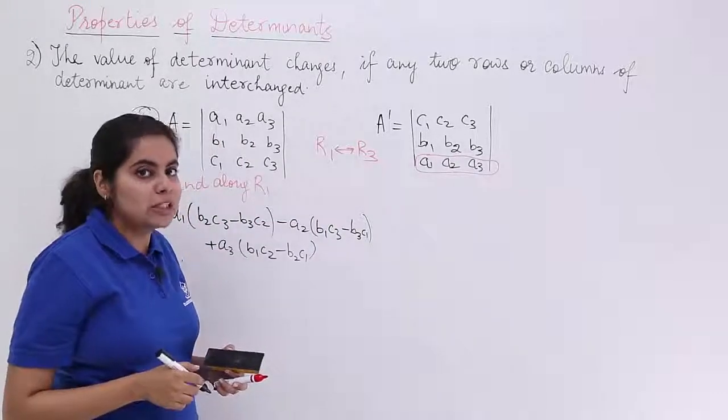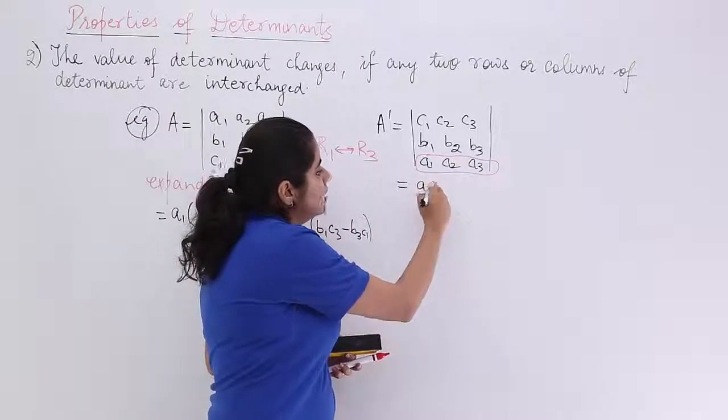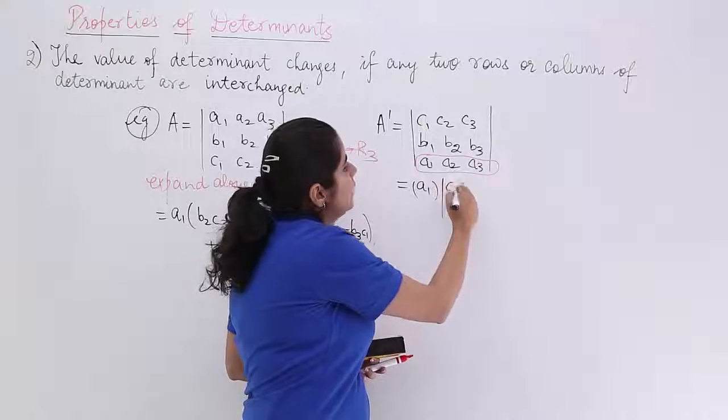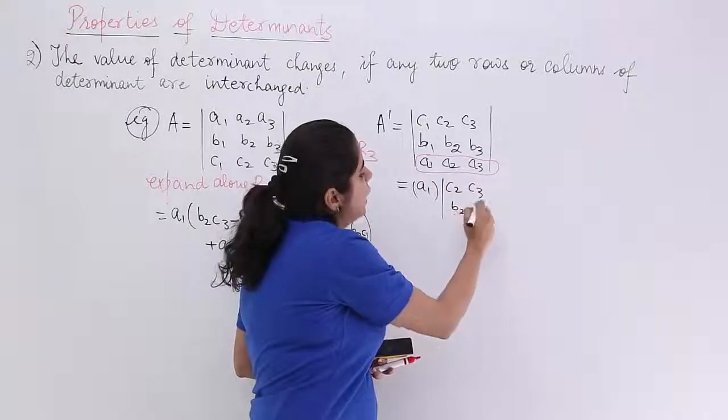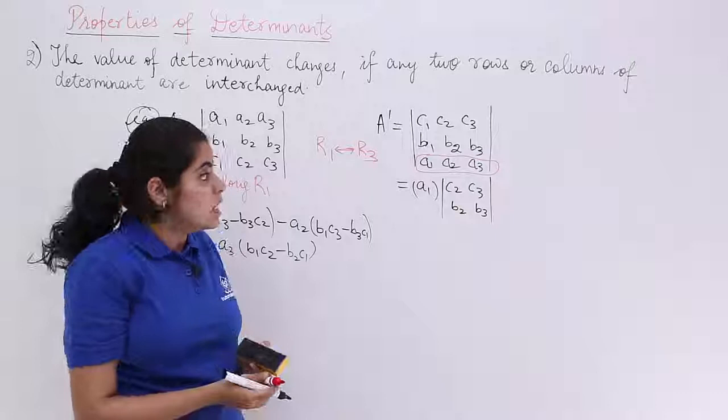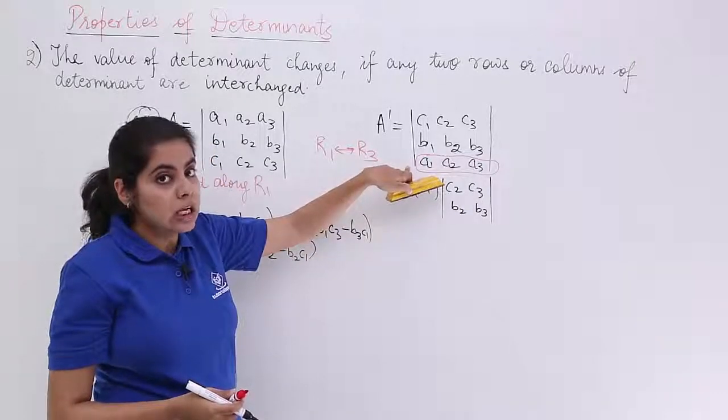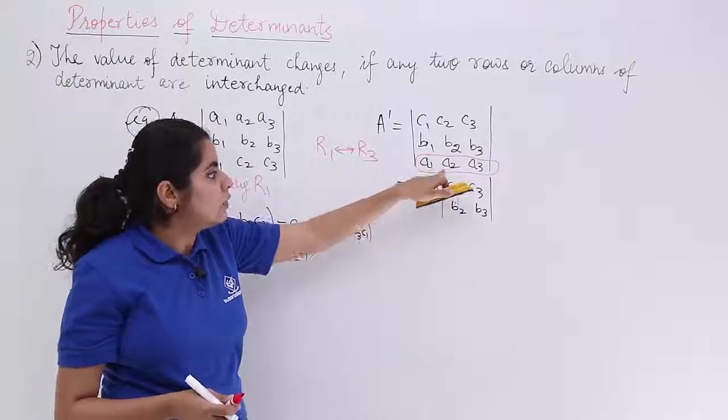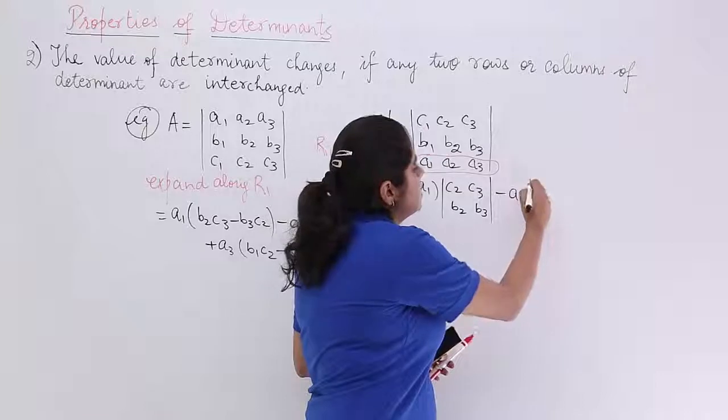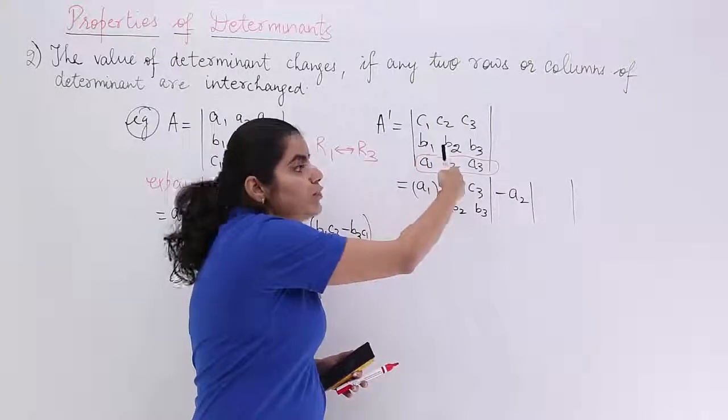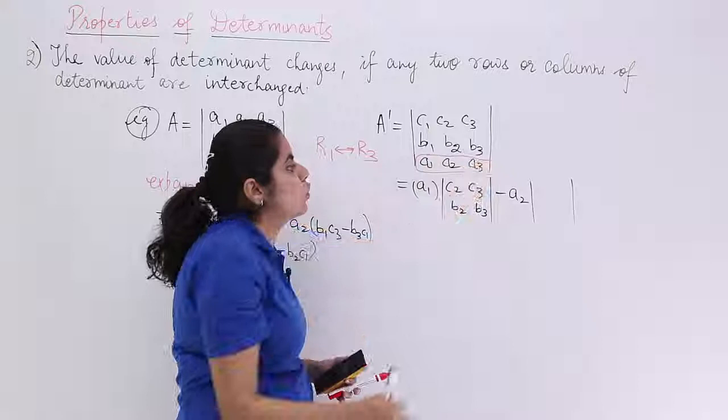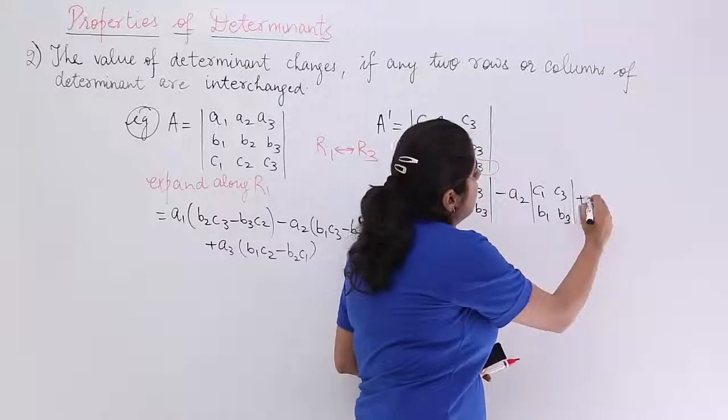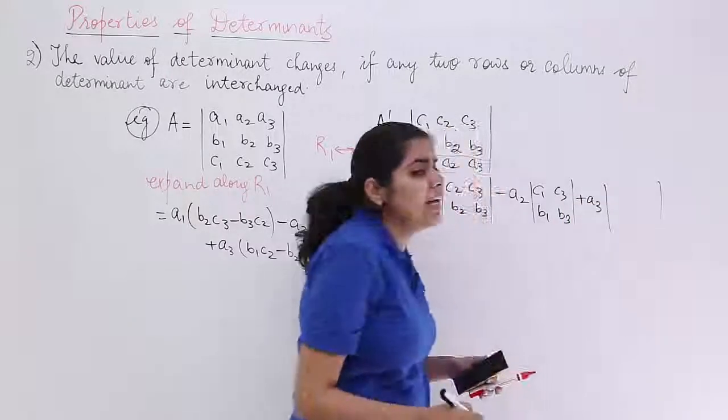Now let's evaluate along the third row. Along the third row means it is A1 only. Remove the third row, remove the first column, you have a sub-determinant. Why am I writing the sub-determinant? To make things more clear. Now this is which kind of element? This is third row, first column. So 3 plus 1 is 4 which is even. Now this has to be minus. So it is minus A2 and a sub-determinant. Remove this column of second, remove this row of third. So it is C1, C3, B1, B3. Last but not least, I have plus A3.